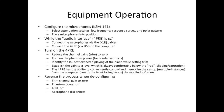Equipment operation. Configure the microphones as appropriate. In the case of the 141s, you can select attenuation settings, low frequency response curves, and polar pattern. Then place the microphones into position in preparation for recording. While the audio interface — in this case the 4P — is off, connect the microphones via the XLR cables. Connect the 4P via USB to the computer. Now turn on the 4P, reduce the channel gains and trim to zero, turn on the phantom power for condenser mics, and identify the loudest expected playing of the piano while setting the trim. Establish the gain to a level which is always comfortably below the red to eliminate clipping and saturation. The 4P has the ability to conveniently control and memorize the setup from the computer via supplied software.